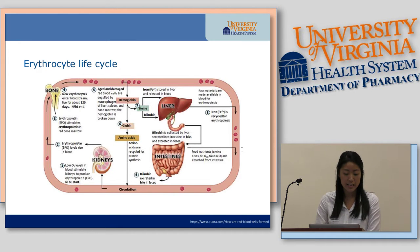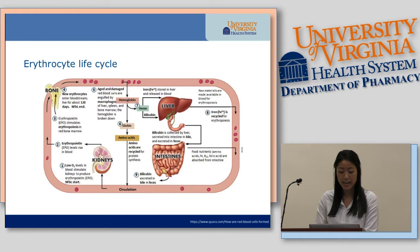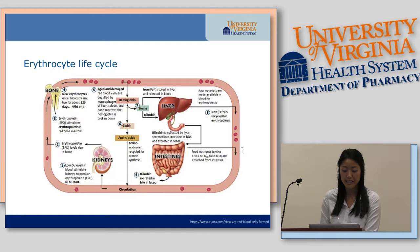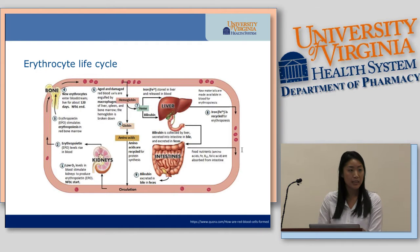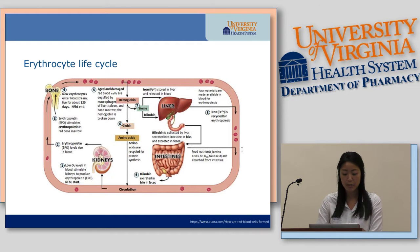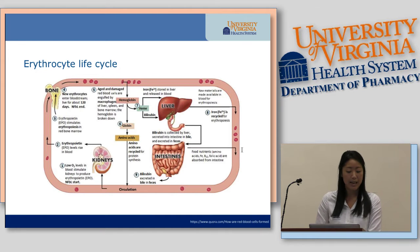I want to quickly review the red blood cell life cycle, because in anemia it's caused by a disruption in this cycle and it can happen at multiple points in this process. Starting at the kidneys — the kidneys detect low oxygen levels in your circulation. This stimulates the release of EPO, or erythropoietin. EPO then stimulates the erythropoietic process, which increases your red blood cell concentration, increasing the oxygen-carrying capacity of the blood, and this serves as a negative feedback loop.